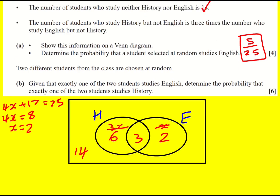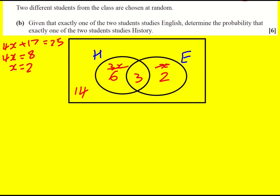The second part of this question steps things up quite significantly because we're picking two people from the class at random — it can't be the same person. We're given that exactly one of the two students studies English, and asked to determine the probability that exactly one of the two students studies History.